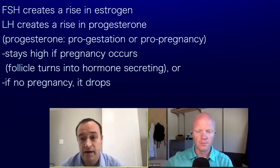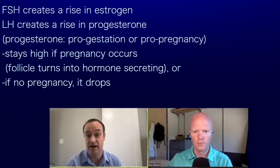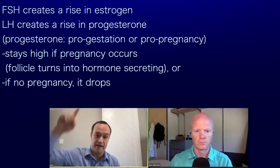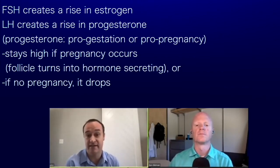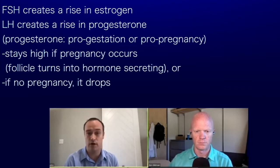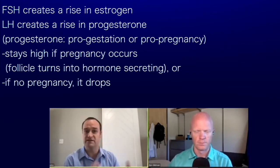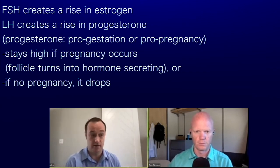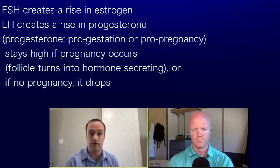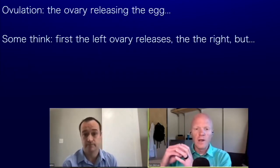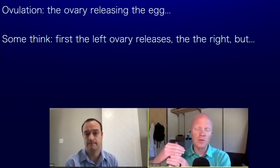As a basic rule, FSH especially creates an estrogen rise and then LH will elicit progesterone to start to rise. That progesterone either stays high — meaning pro-gestation or pro-pregnancy — if a woman is pregnant, or if that doesn't happen and the person doesn't get pregnant, then that progesterone drops. The word ovulation refers to the actual emission, or the ovary actually releasing the egg.